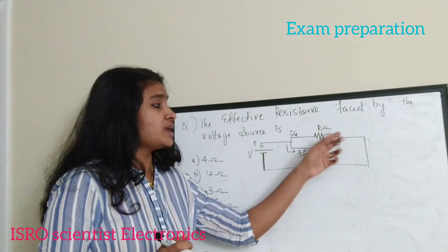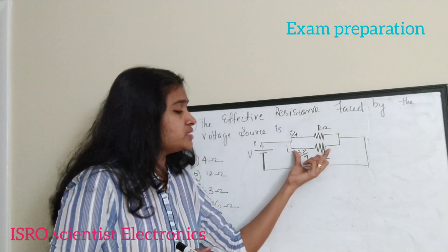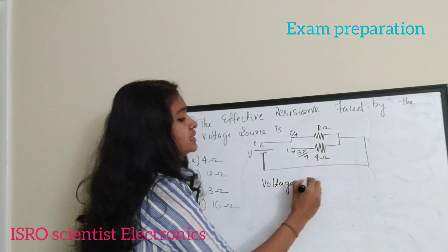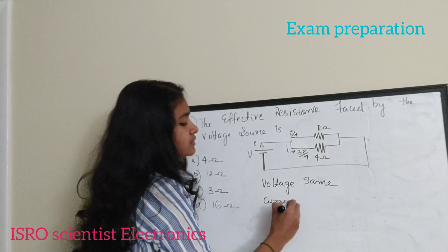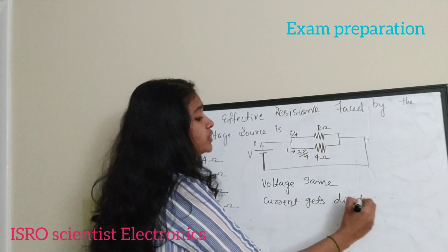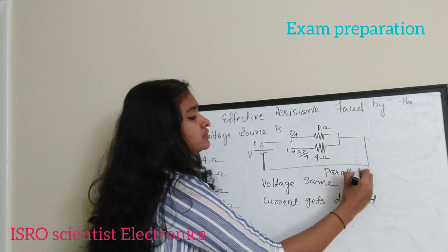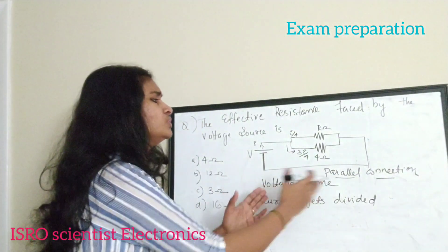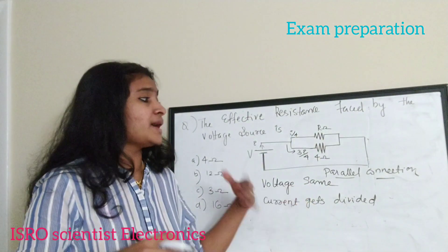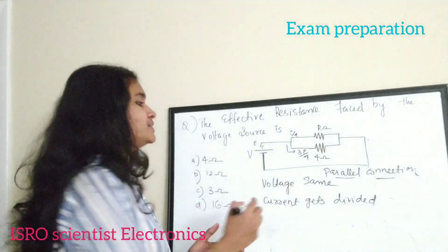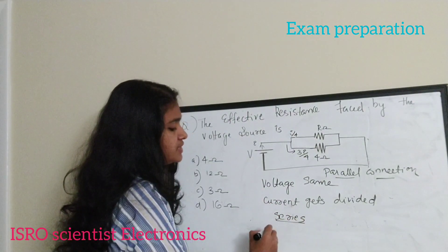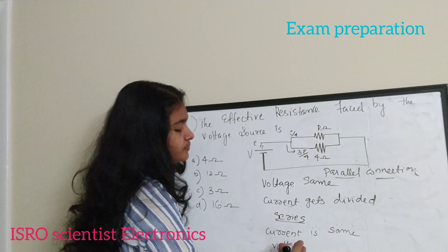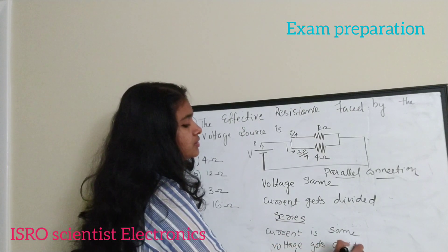The voltage across both parallel branches will be equal since it is a parallel connection — voltage is the same and the current gets divided. In series connection it is the opposite: the current is the same and the voltage gets divided across different resistors.